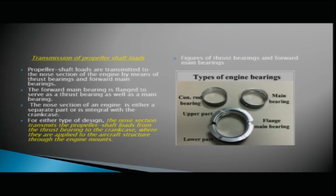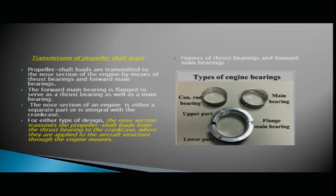The forward main bearing is flanged to serve as both a thrust bearing and a main bearing. The nose section of an engine is either a separate part or is integral with the crankcase. For either design, the nose section transmits the propeller shaft loads from the thrust bearing to the crankcase, where they are applied to the aircraft structure via the engine mounts.